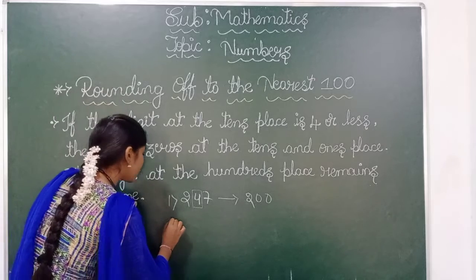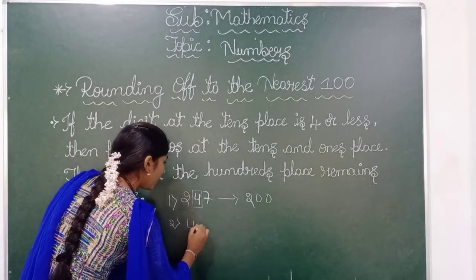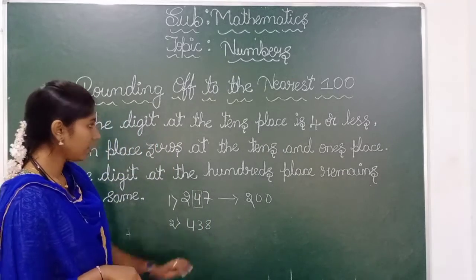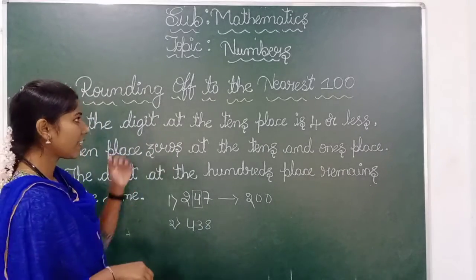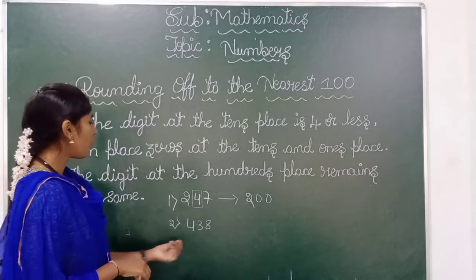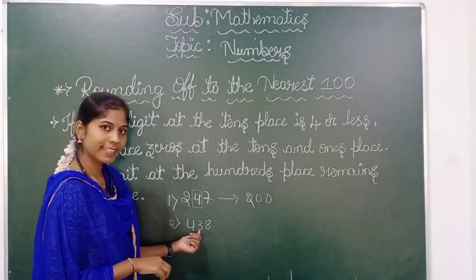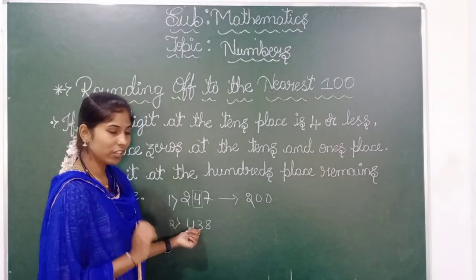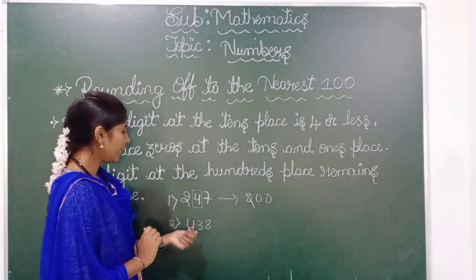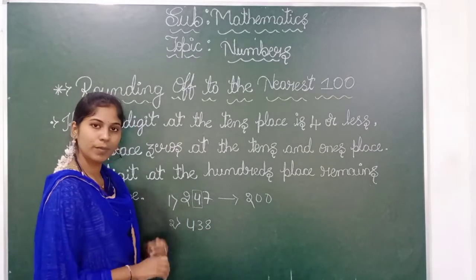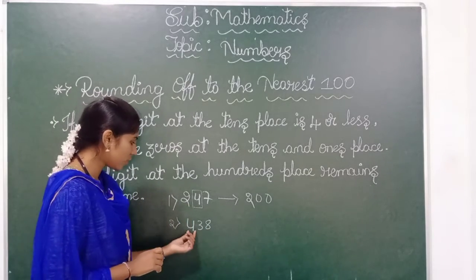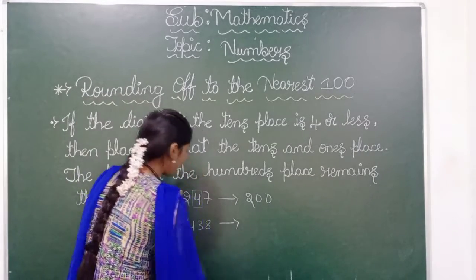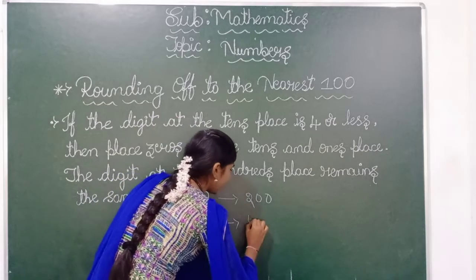So I will take another example: 438. Here you are rounding off 438 to the nearest hundred. So this is the ones and tens place. The tens place is three here — it is less than four. So the ones and tens places will both become zero. No change in the hundreds place.